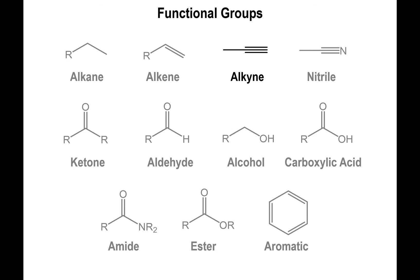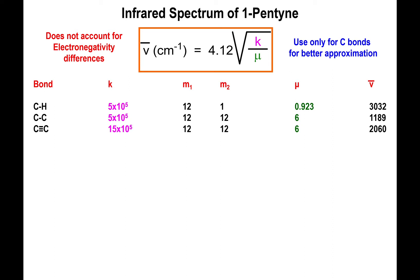Let's talk about the infrared spectra of triple bonds, starting with alkynes. As a representative example, we'll introduce 1-pentyne. Based on the formula, we expect a triple bond to have a value somewhere in the 2100 region. For carbon-carbon single bonds, we expect something in the fingerprint region, but the most important portion will be the carbon-hydrogen bond somewhere in the 3000 region.